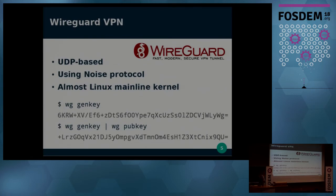The keys in WireGuard are quite simple. With a single command you can create a key — it's 256 bits, encoded as Base64. That's your private key, and you can easily derive your public key from it.